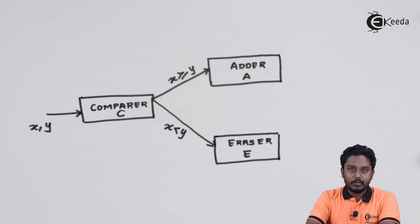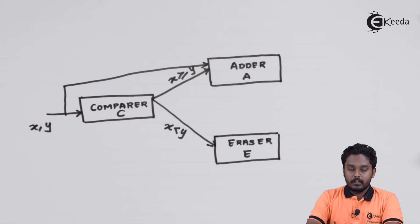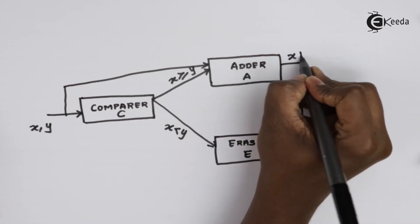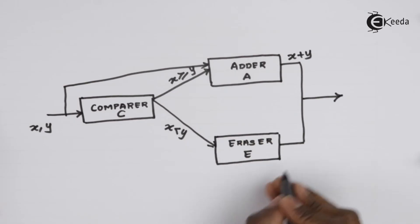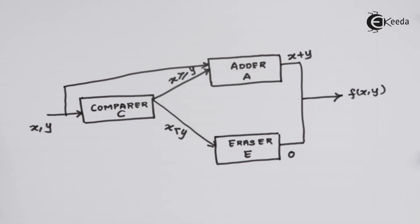For the adder, we need to have the values of x and y back again. So we will supply x and y to the adder as well. We have to combine the outputs of eraser as well as adder to get the final output of the required Turing machine. The adder would output x plus y, the eraser would output a zero.